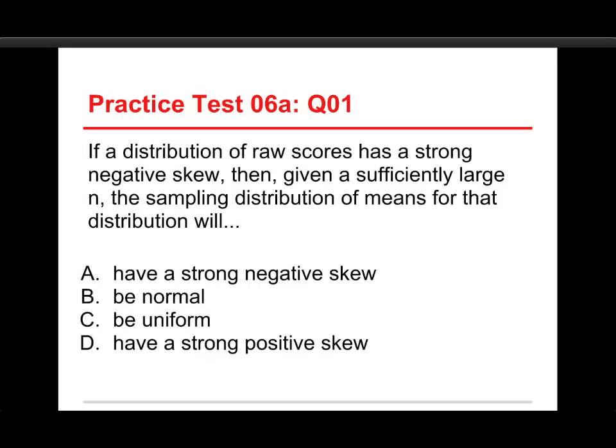The first question on this test is: if a distribution of raw scores has a strong negative skew, then given a sufficiently large n, or sample size, the sampling distribution of means for that distribution will: A, have a strong negative skew; B, be normal; C, be uniform; or D, have a strong positive skew? So we start with strong negative skew, we get a sampling distribution, and what does it look like? Well the answer is, it's going to be normally distributed, it'll be a bell curve.